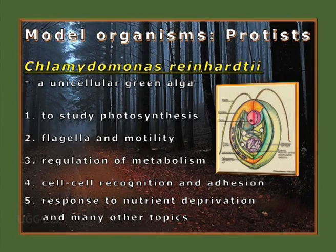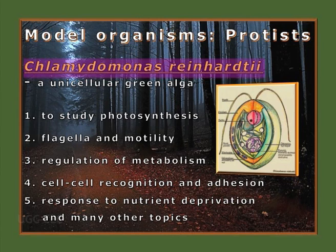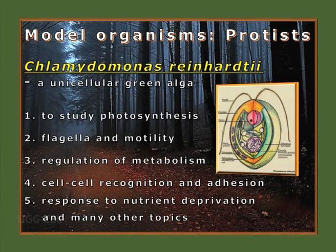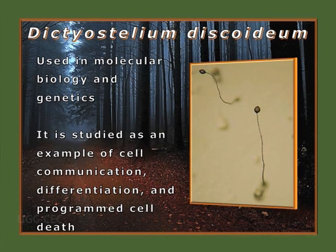Among the protists, the first name is Chlamydomonas reinhardtii. It is used to study photosynthesis, flagellar motility, gene regulation, cell-to-cell recognition, aeration, and response to nutrient deprivation, among many other topics. Next comes Dictyostelium discoideum, used in molecular biology and genetics as an example of cell communication, differentiation, and programmed cell death.